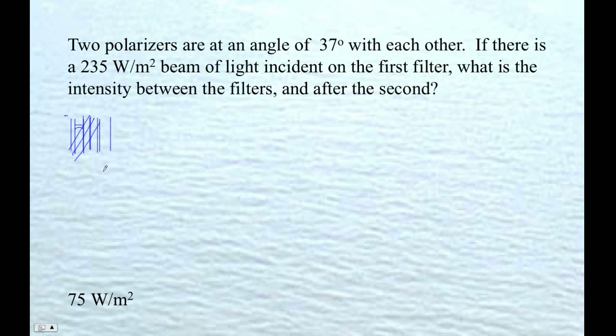So there's 235 watts per square meter, and then here's our first filter. On the other side of that, half of the light, this is unpolarized, half of the light is going to make it through this first filter, so 235 divided by 2, 235 divided by 2 is 117.5. So this is what makes it through here, so this is what comes in.